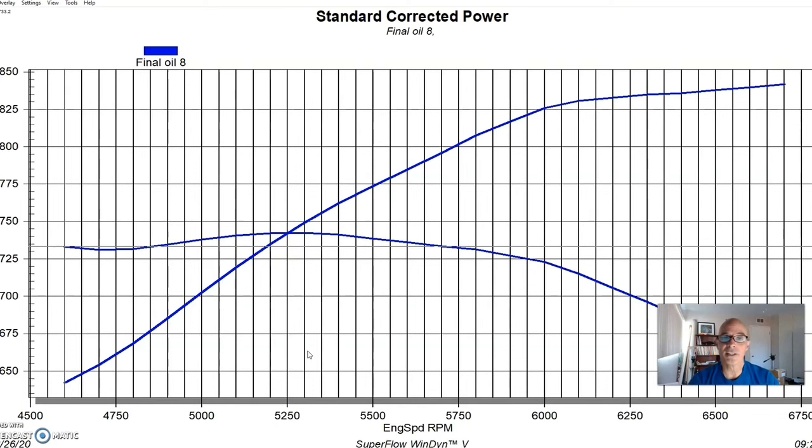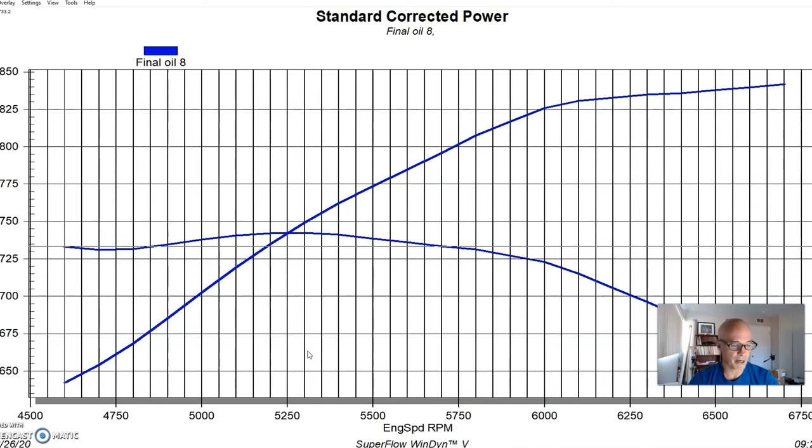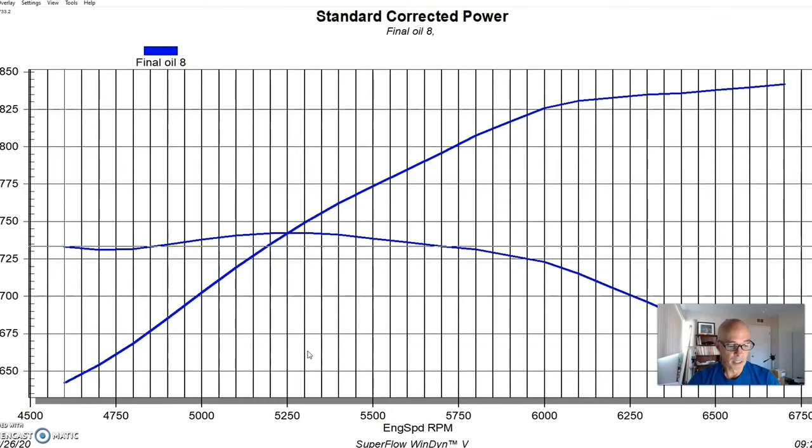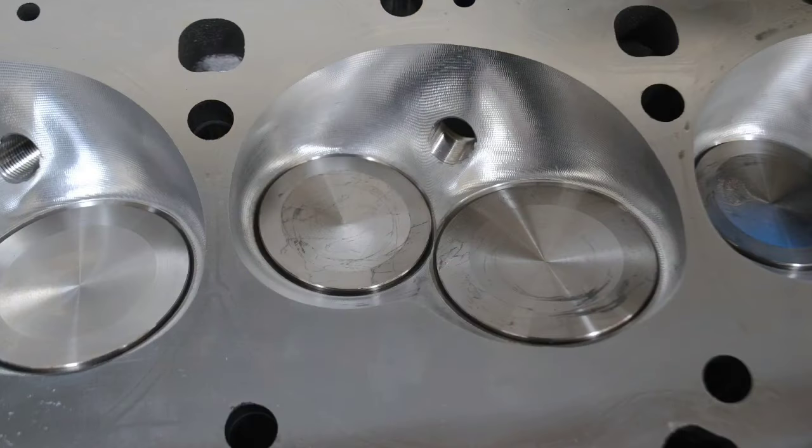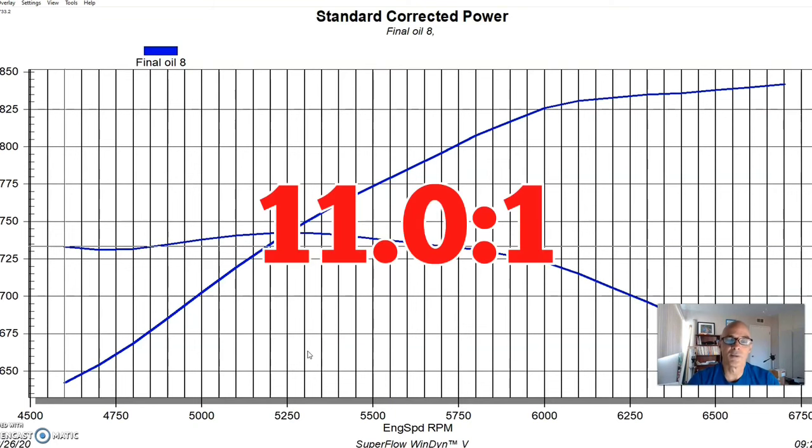We stuffed in there a forged rotating assembly. The rotating assembly consisted of a Lunati Signature Series 4340 forged steel crank, and then we combined that with a set of rods and pistons from CP Carrillo. It was their Bullet series, really good stuff, worked out well. The forged pistons combined with the chamber in the two cylinder heads that we tested, which were both between 121 and 122 cc, so they were both pretty even there. They produced a static compression of 11 to 1.